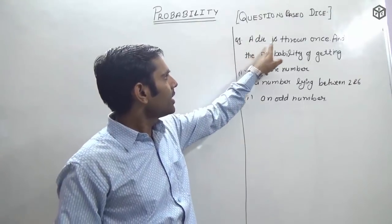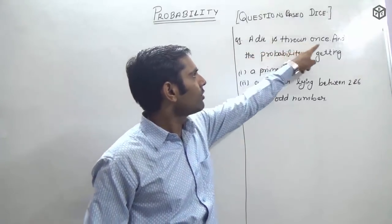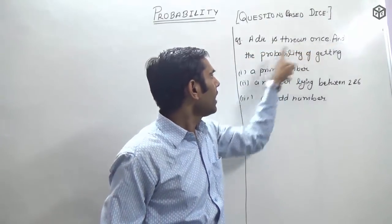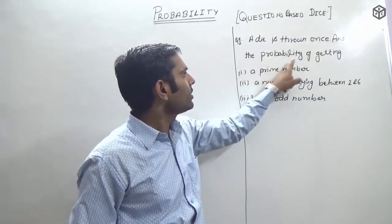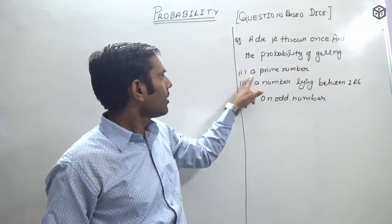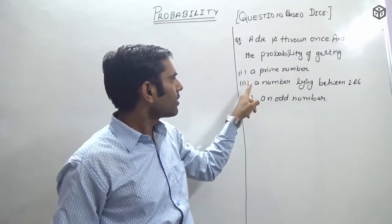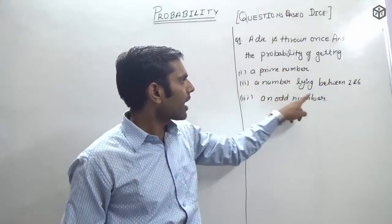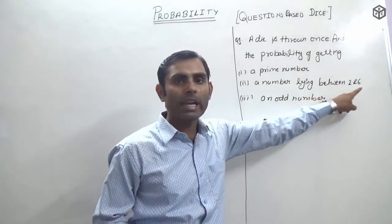A die is shown once. Find the probability of getting a prime number, and a number lying between 2 and 6.